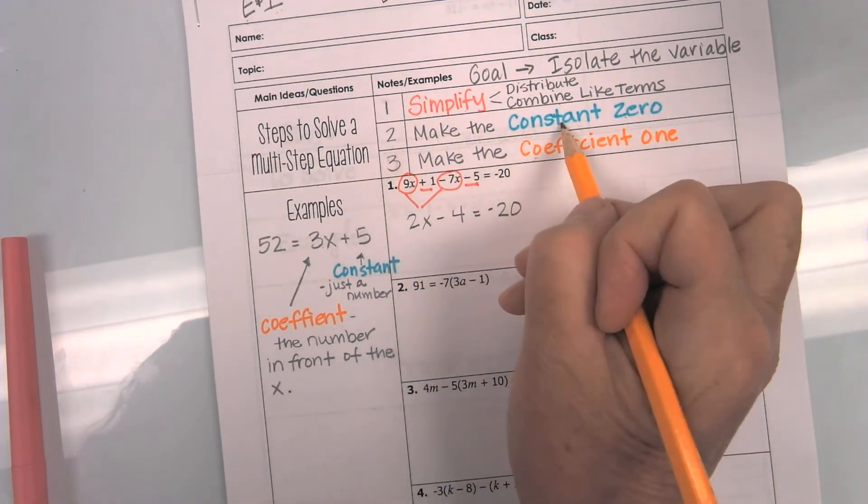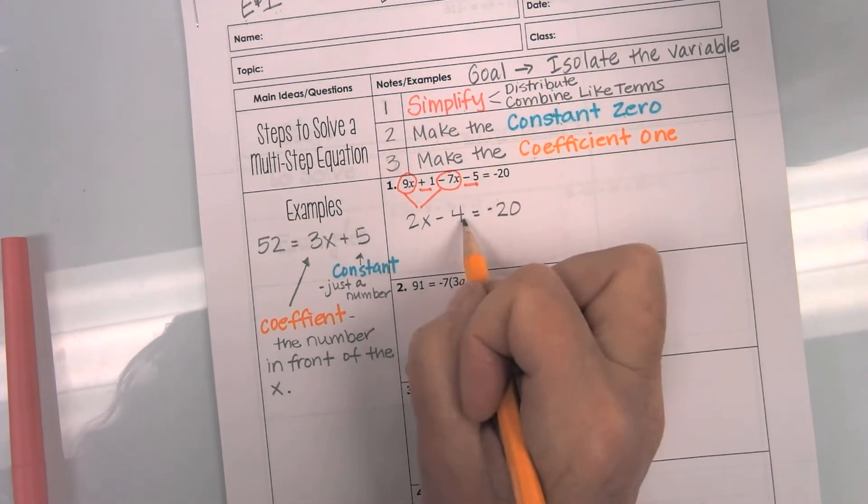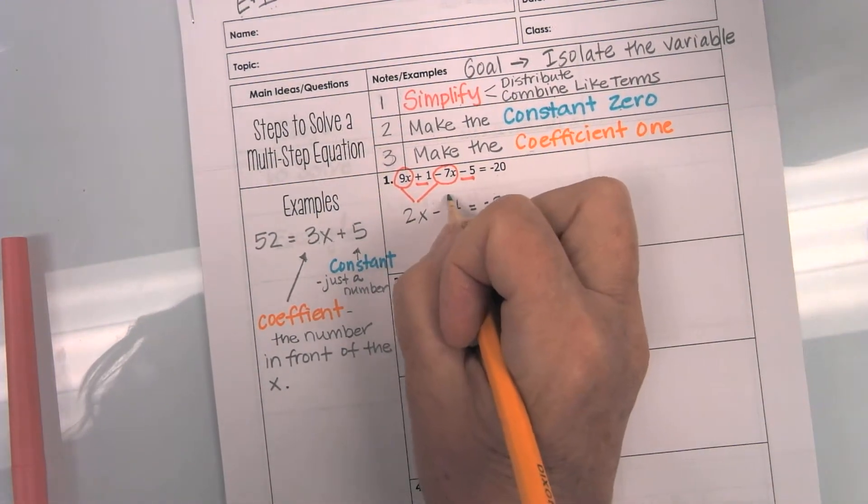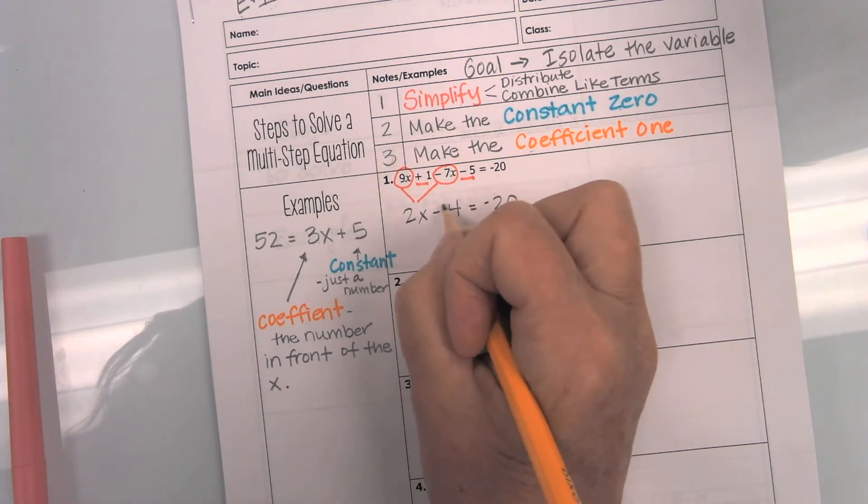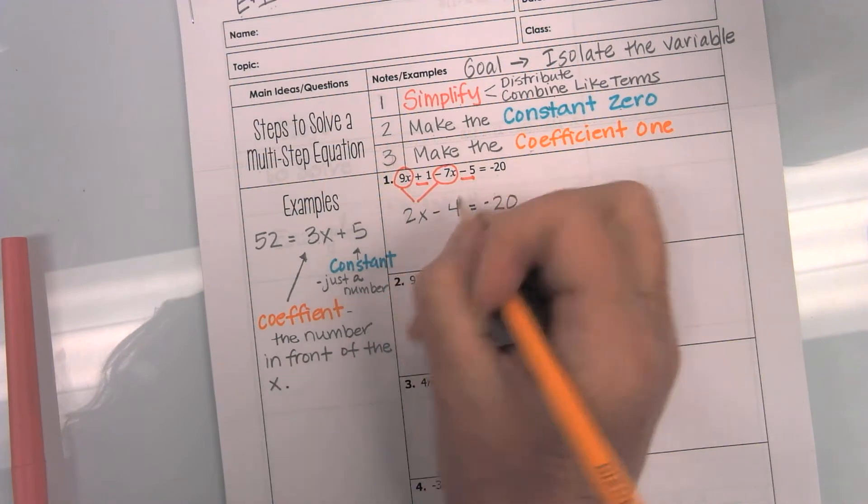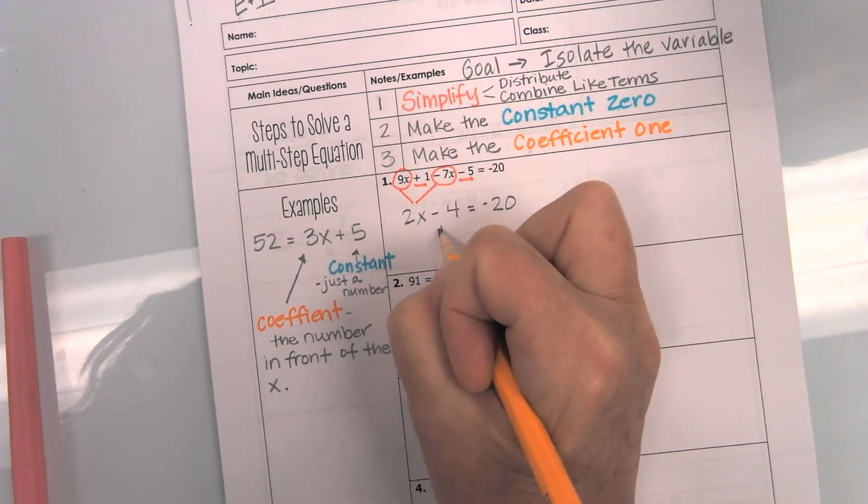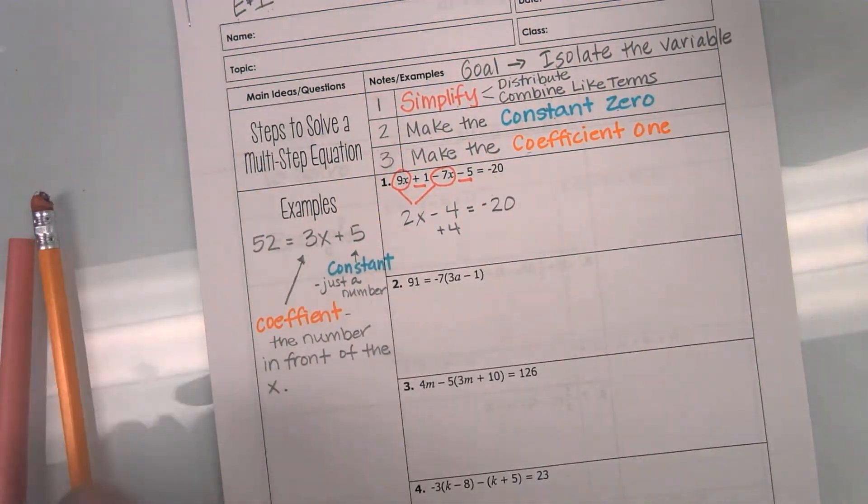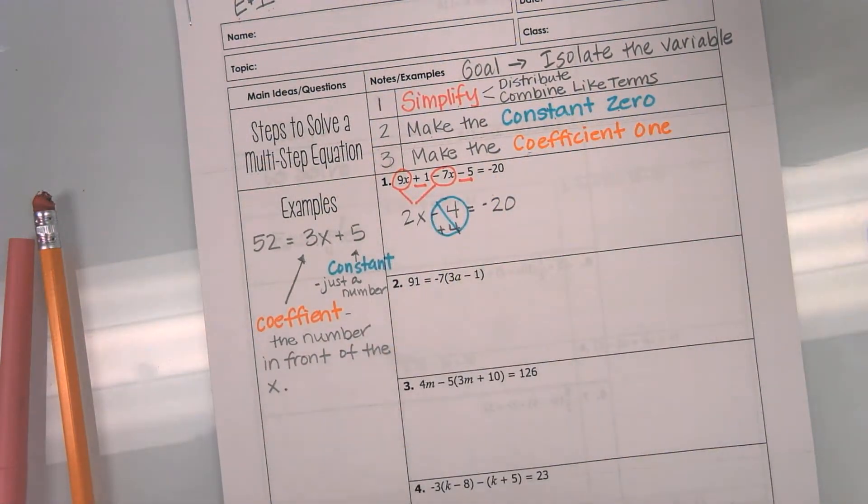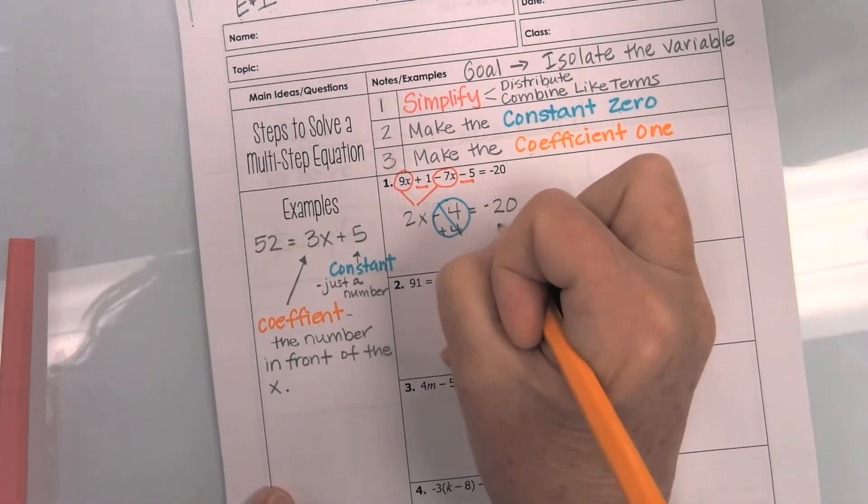Now, step 2, make the constant 0. Now, remember the constant is the number that's by itself. So, what I want to do is I want to make this negative 4 into a 0. How do I make a number a 0? Well, I add the opposite. So, negative 4 plus 4 becomes a 0, and I'm done with it. But whatever I do to one side, I have to do to the other.